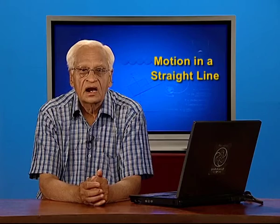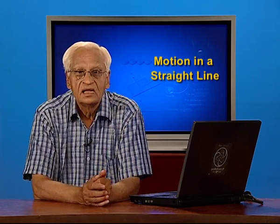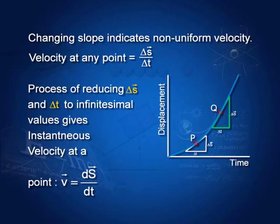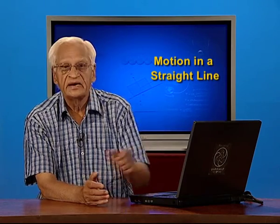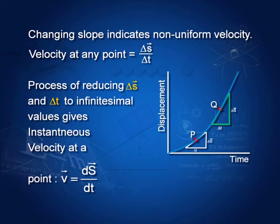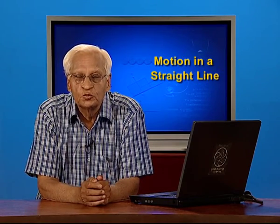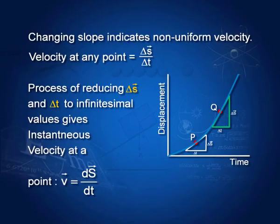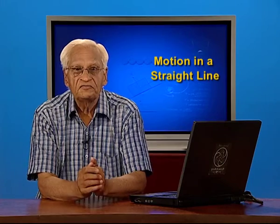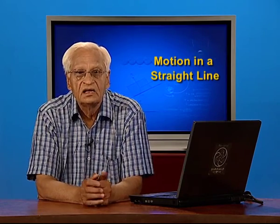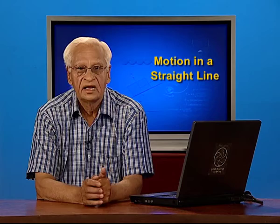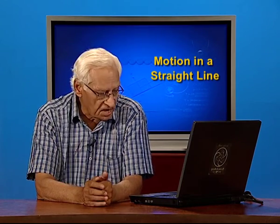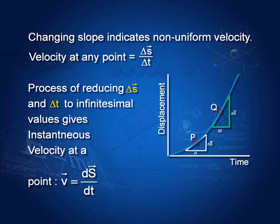However, if the graph is not linear, then the velocity at a point like P is found by the slope at P, that is delta S by delta t. At the point Q, the slope is found again by delta S by delta t, and you can see that the slopes at these two points are different. This means that the velocity is changing — it is not constant. If the velocity is not constant, then we have to define what is known as instantaneous velocity at a point, defined as vector v equal to dS/dt.